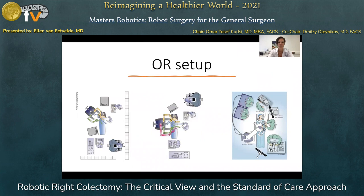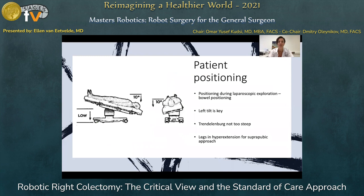This is a typical OR setup. If you have an X system, you need to dock the robot over the right shoulder of the patient. If you have an XI system, you can dock from anywhere you want and target towards the hepatic flexure. The scrub nurse and the assistant are positioned on the left-hand side of the patient. This is a typical patient positioning, with a slight Trendelenburg and left tilt — the left tilt is very important to have good bowel positioning and exposure of the operative field.